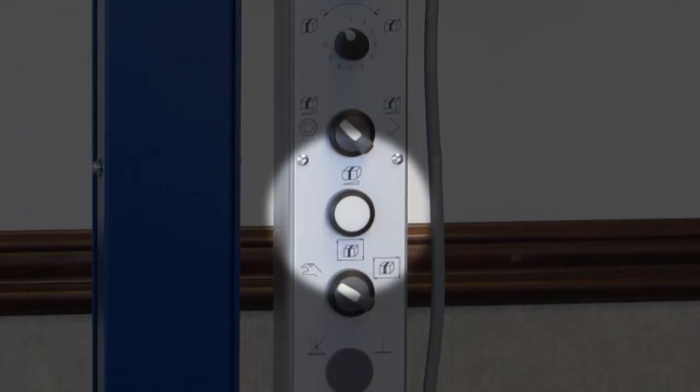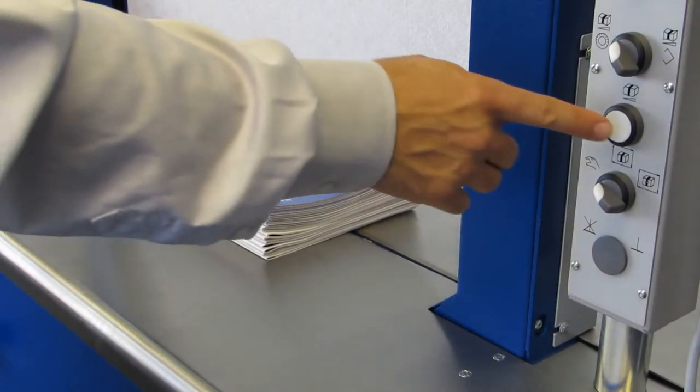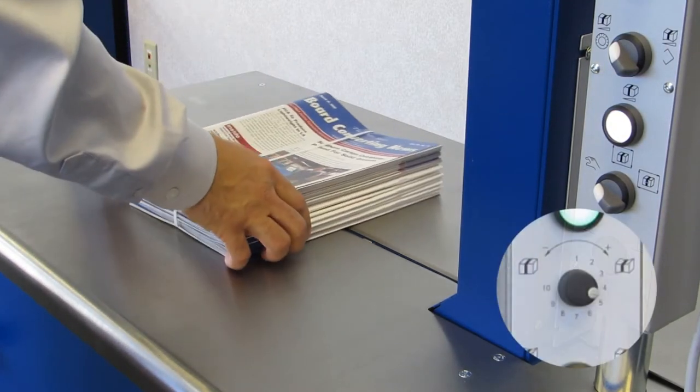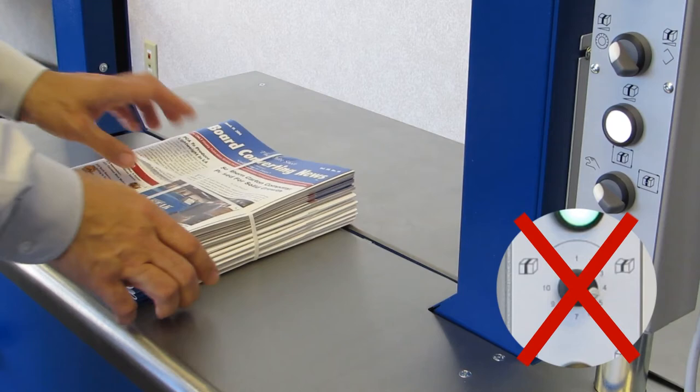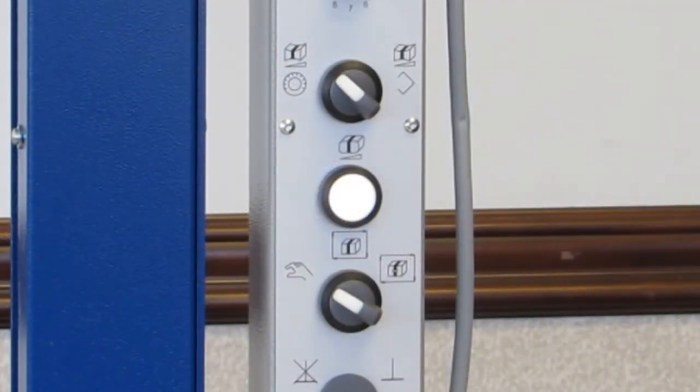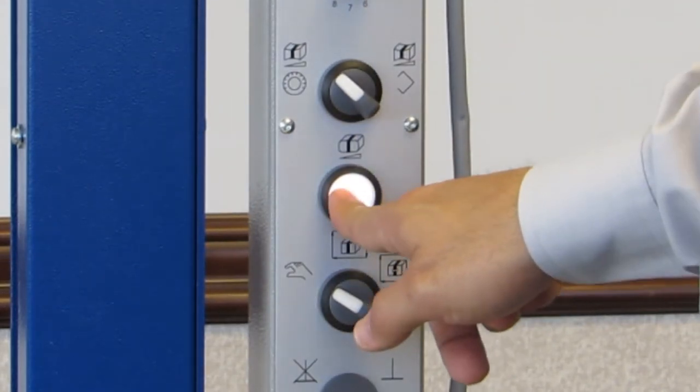A white light will come on indicating that the machine is now in the soft tension mode. Please note that the tension dial is deactivated when in the soft tension mode. To disable soft tension, press the button again. Notice that the indicator light turns off.